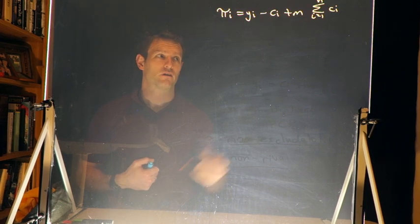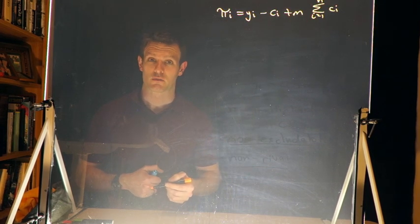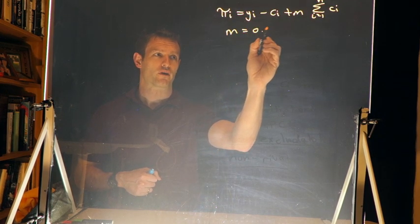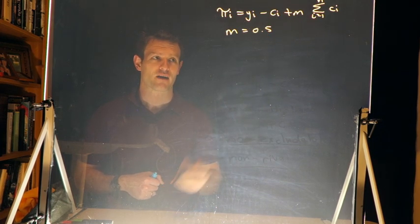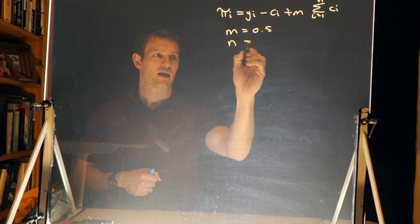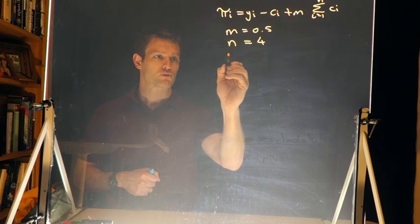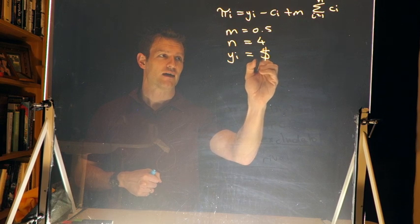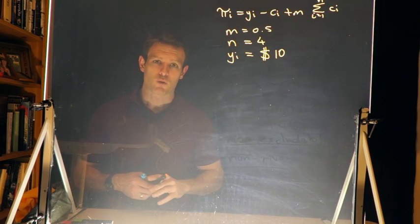Our parameters here are m and n, and also the endowment each player starts with. Let's say m is equal to 0.5, so our marginal per capita return is 0.5. We're also going to assume n is equal to four — there are four players in this public goods game — and each player starts with an endowment of ten dollars.